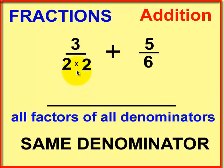Let's break our denominators down into prime factors. So four is two times two. Six is two times three.